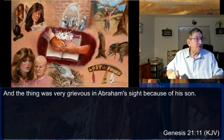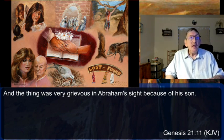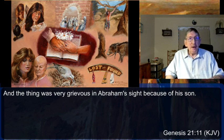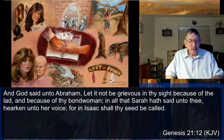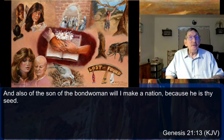Genesis 21:11-19: 'The thing was very grievous in Abraham's sight because of his son.' Sarah wanted Hagar gone because of controversy between Isaac and the older Ishmael. 'And God said unto Abraham, Let it not be grievous in thy sight; for in Isaac shall thy seed be called. And also the son of the bond woman will I make a nation, because he is thy seed.' So God did say Isaac was going to carry on the seed but still honored the other boy.